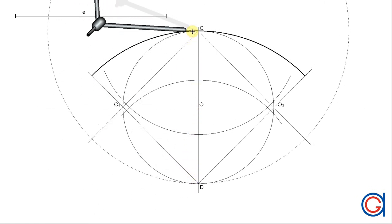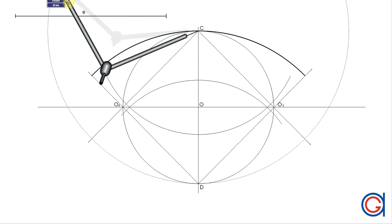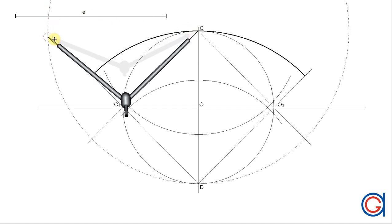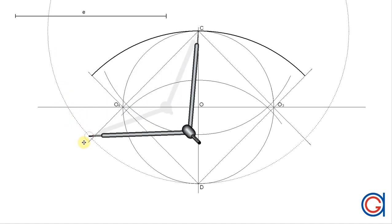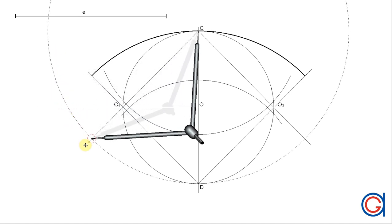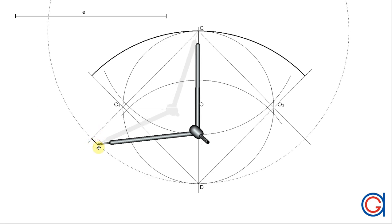Repeating the process, setting the compass on point C with the same radius, we scribe another arc from the elongated line at O4 to the elongated line at O3.